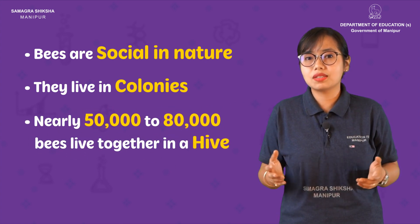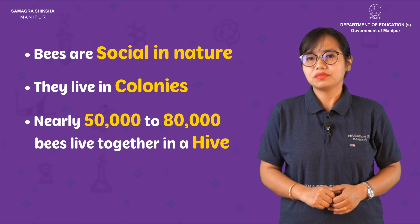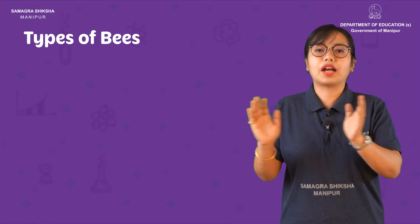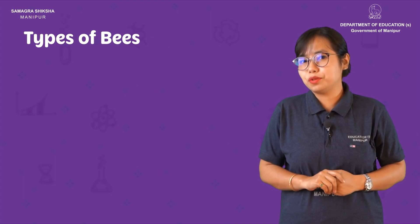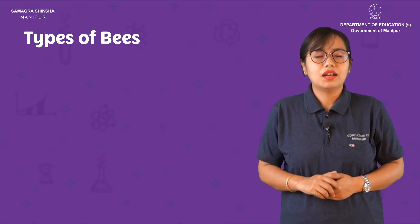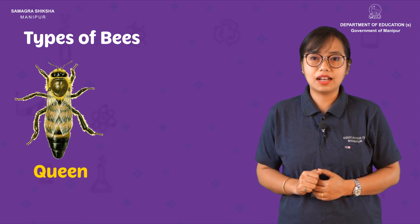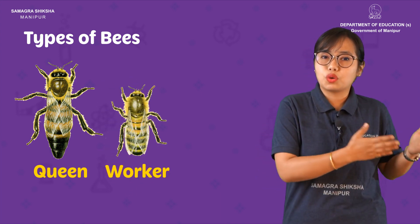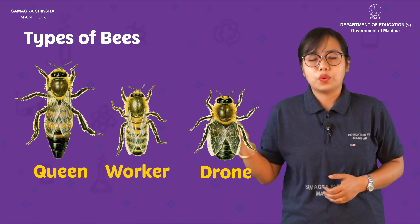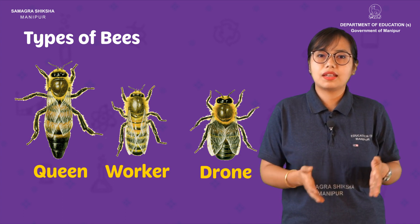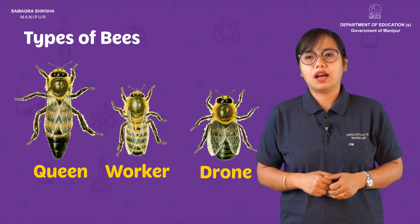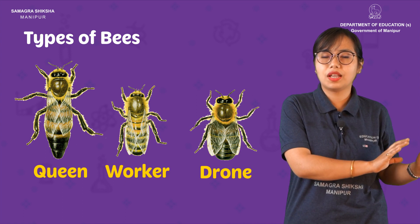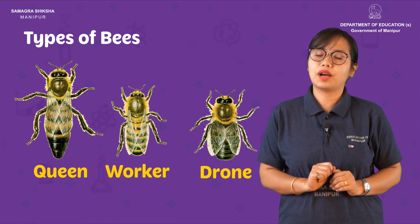A beehive contains around 50,000 to 80,000 bees. There are three types of bees in a hive: the queen bee, the worker bees, and the drones. Each type has its own specific role and task within the hive.